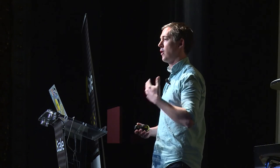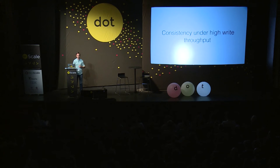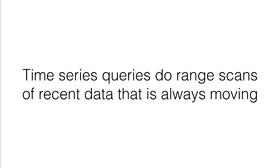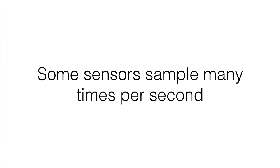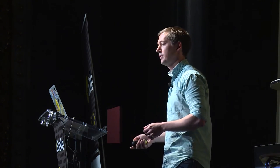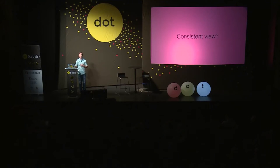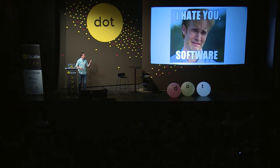If we wanted to create a CP system for time series, what would that look like? How would we guarantee consistency under high write throughput? Time series queries do range scans over recent data that's always moving. With sensor data, sometimes you have sensors sampling multiple times per second; with event streams it can be even worse. What does a consistent view of this data look like? Would we have to stop everything at a point in time and say nobody can write data so we can answer this query?